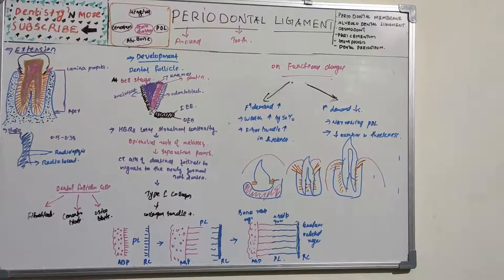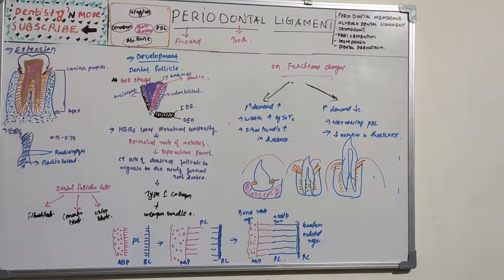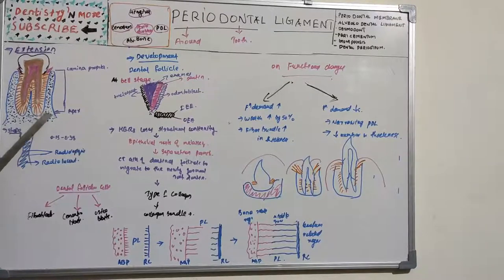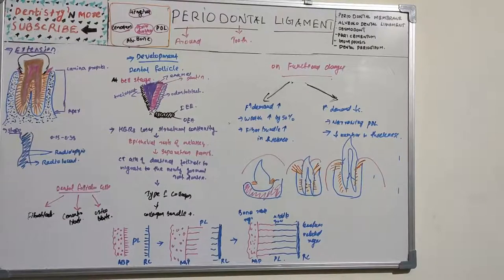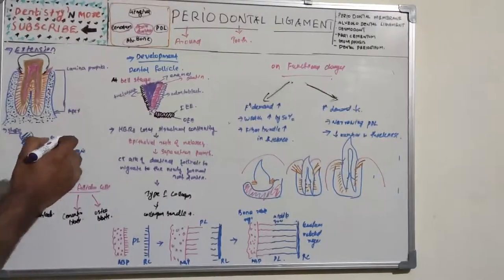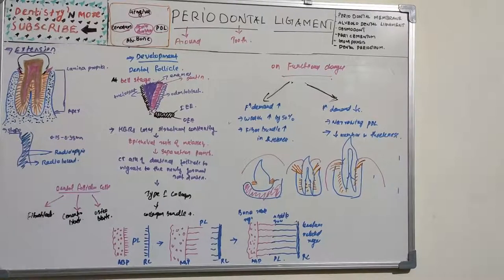The alveolar crest fibers demarcate this coronal extension of the periodontal ligament. At the root apex, the periodontal ligament merges with the dental pulp. The width ranges from 0.15 to 0.38 mm.